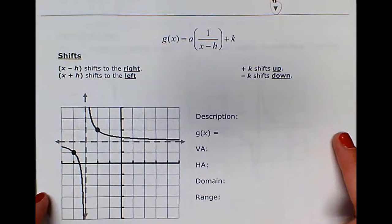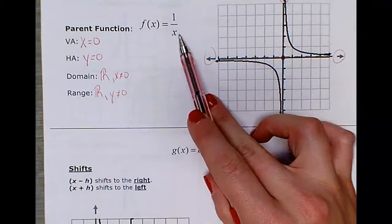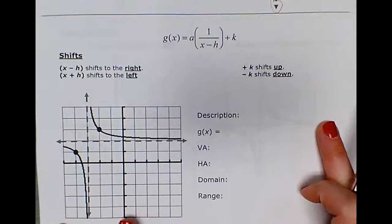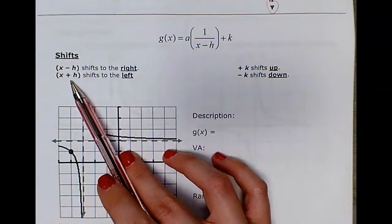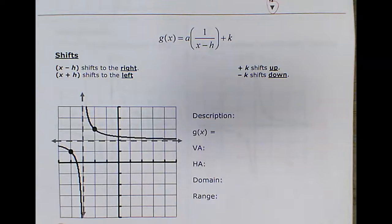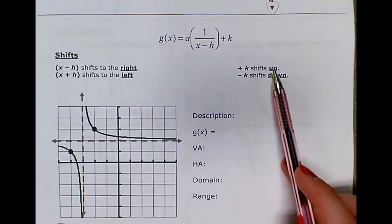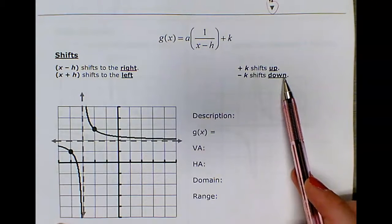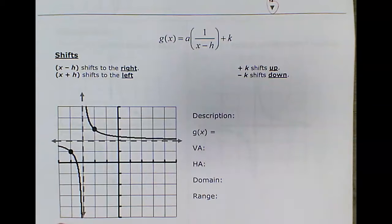The general form of transformations of rational functions: whenever you have a number added or subtracted with x in parentheses, that indicates a horizontal shift. Since x is in the denominator, x minus h shifts to the right, and x plus h shifts to the left. Adding a constant on the outside is a vertical shift — addition shifts up, subtraction shifts down. A coefficient on the outside indicates a vertical stretch.